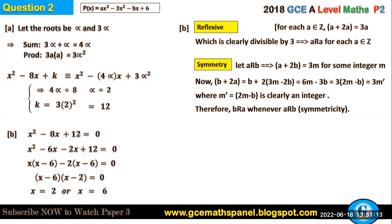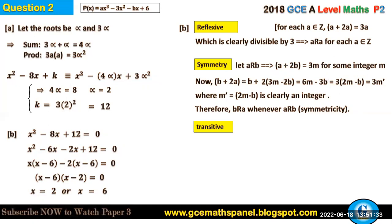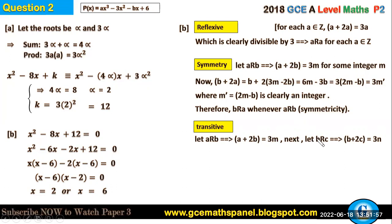For transitivity: if a is a friend of b and b is a friend of c, then a is a friend of c. So if a relates b implies a + 2b = 3m, and b relates c implies b + 2c = 3n (where m and n are integers), then we must show a relates c, i.e., a + 2c is a multiple of 3.